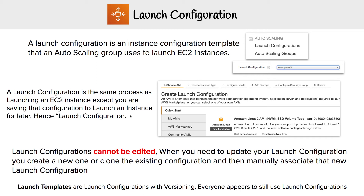There is something also known as a launch template. They are launch configurations but with versioning, and it's AWS's new version of launch configuration. Generally when there's something new I might recommend you use it, but it seems that most of the community still uses launch configurations, so the benefit of versioning doesn't have a lot of value there. I'm not pushing you to use launch templates, but I just want you to know the difference, because it looks like pretty much the same thing — it just has versioning.